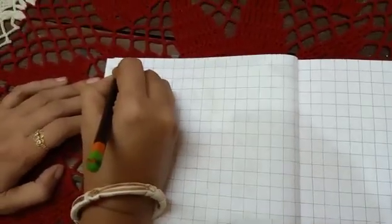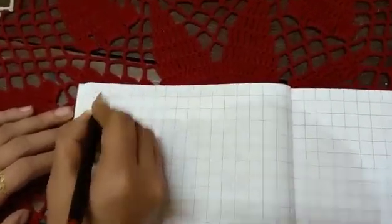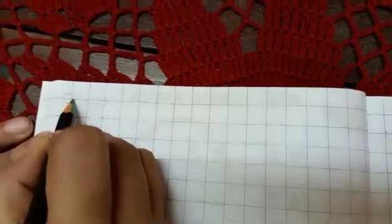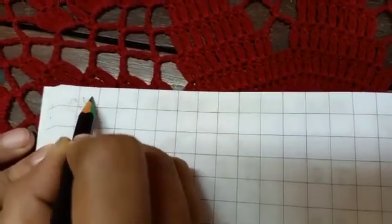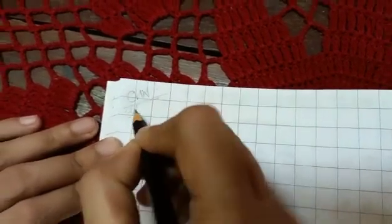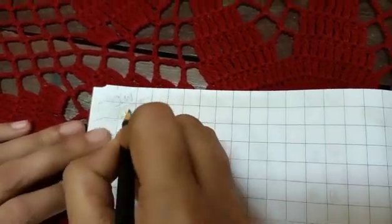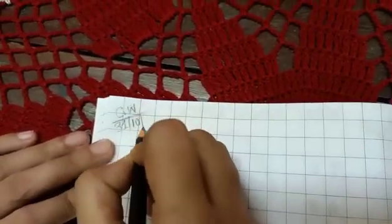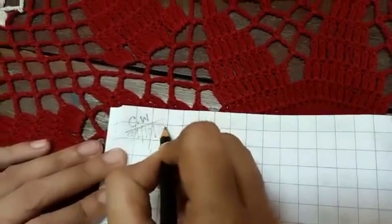Ok children, here you will write C.W and today's date. Today's date is 31 oblique 10 oblique 2020.